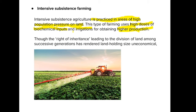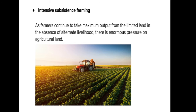This type of farming faces a problem called the right of inheritance. Land is divided into many holdings because successive generations keep dividing the land, making land holding sizes uneconomical. Farmers try to get maximum output from limited land, creating enormous pressure on agricultural land. This is the answer if a question asks about the problem faced by intensive subsistence farming.